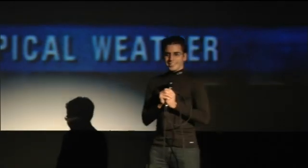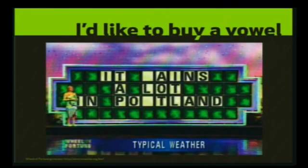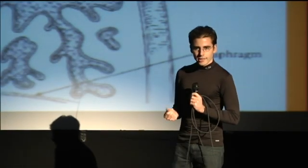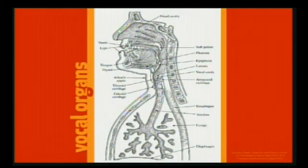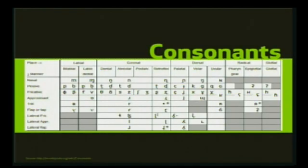So I'd like to buy a vowel. It rains a lot in Portland. How many vowels did I just say? Well, before we can count the vowels we have to know what a vowel is. Before we can know what a vowel is, we should look at how speech is produced. Air starts in your lungs and works its way upward through your trachea, through your vocal cords which vibrate and make a tone, and then your mouth and the tongue and teeth shape the tone into the various sounds.